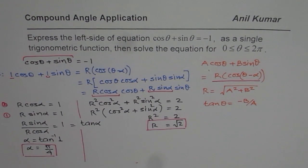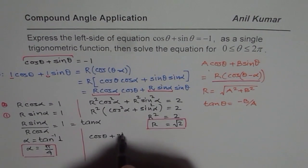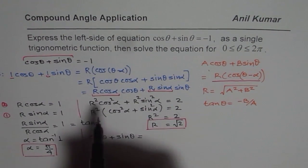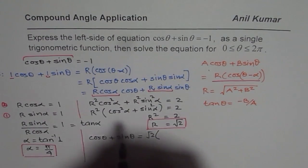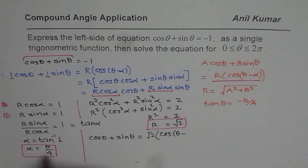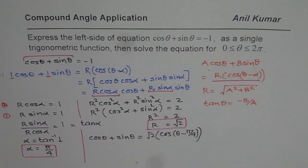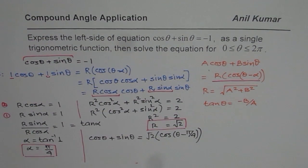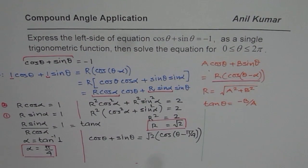We can now write cosθ + sinθ as √2·cos(θ - π/4). So we have expressed the left side of the equation as a single trigonometric function.